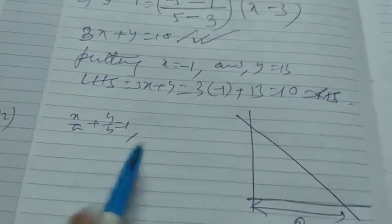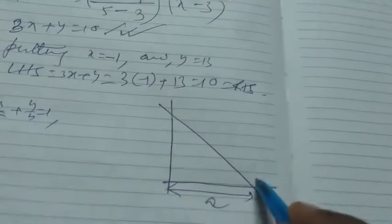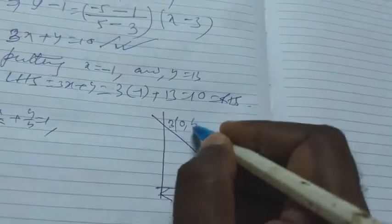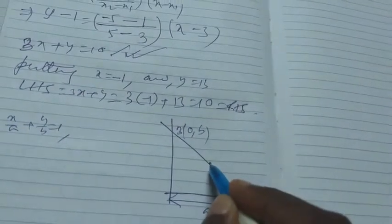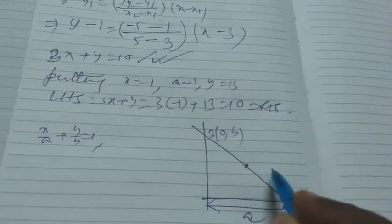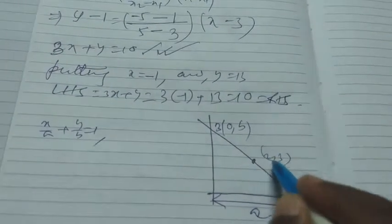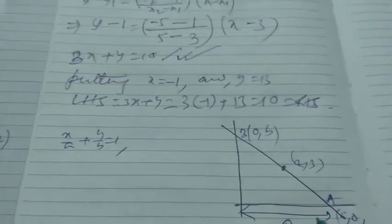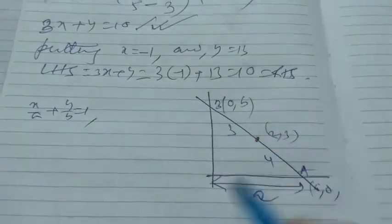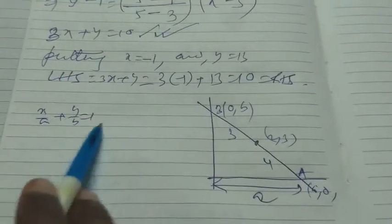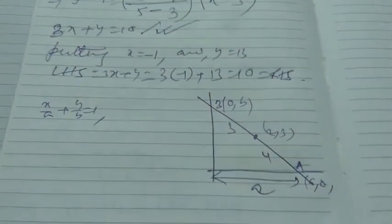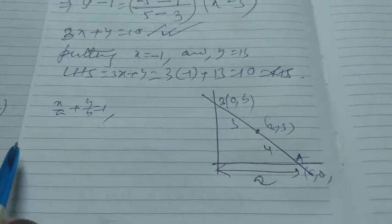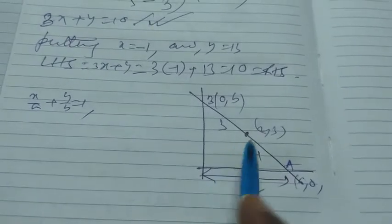In the intercept form, the coordinate of point A is (a, 0) and point B is (0, b). By the given statement, the line passes through the point (2, 3) and divides segment AB in the ratio 4 is to 3. We need to find the values of a and b and substitute them into the intercept form equation.